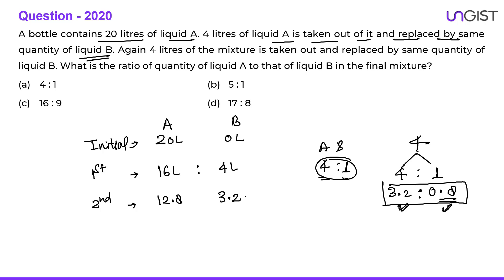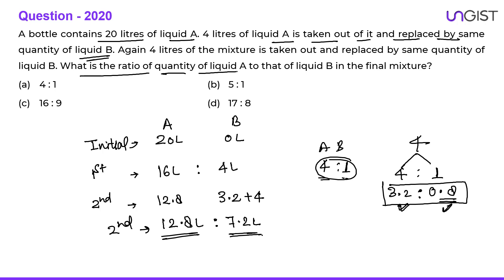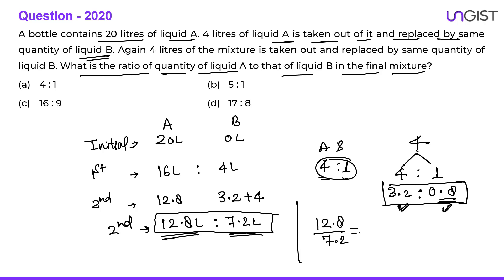We then add the same amount of liquid B (4 liters). So after the second operation we have 12.8 liters of liquid A and 7.2 liters of liquid B. The ratio of A to B is 12.8 : 7.2 = 128 : 72. Both are divisible by 8, giving 16 : 9. Option C is the correct choice.